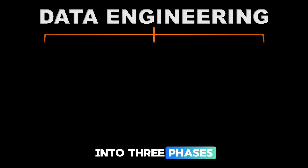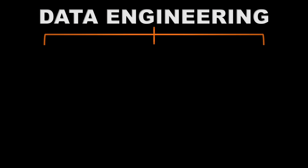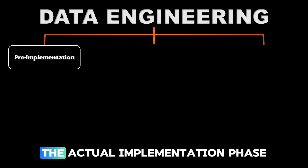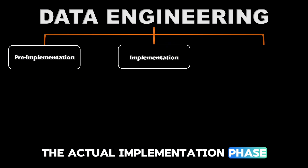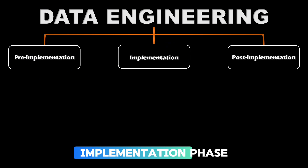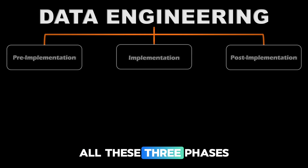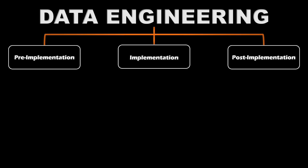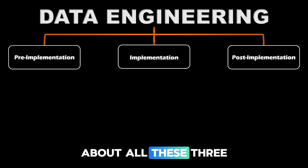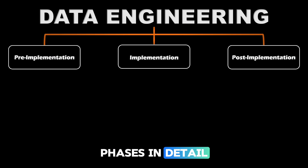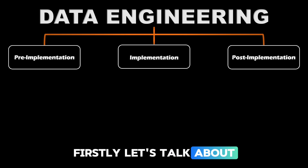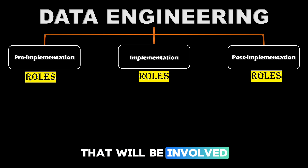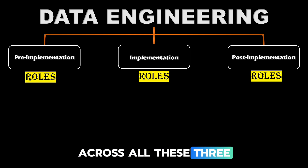We can break any data engineering project into three phases: the pre-implementation phase, the actual implementation phase, and the post-implementation phase. All these three phases are equally important for delivering a successful data engineering project. Now before seeing about all these three phases in detail, let's talk about the different roles that will be involved across all these three phases.